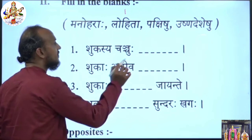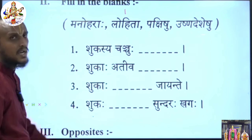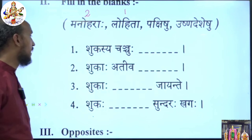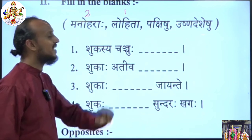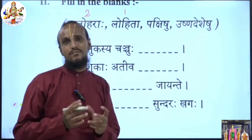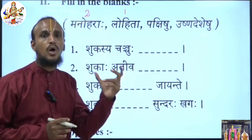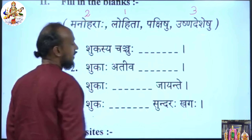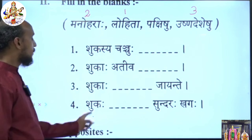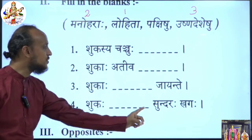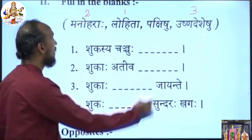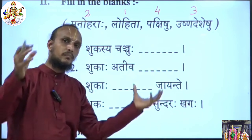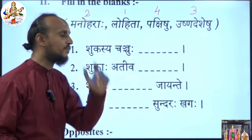'Shukaha Ativa ___' — the answer is Manoharaha, meaning the parrot looks so beautiful. 'Shukaha ___ Jayante' — where do parrots live mostly? In hot countries, so the answer is 'Shukaha Mushnadesheshu Jayante'. 'Shukaha ___ Sundaraha Khagaha' — the answer is Pakshishu, meaning among all birds the parrot is the most beautiful.